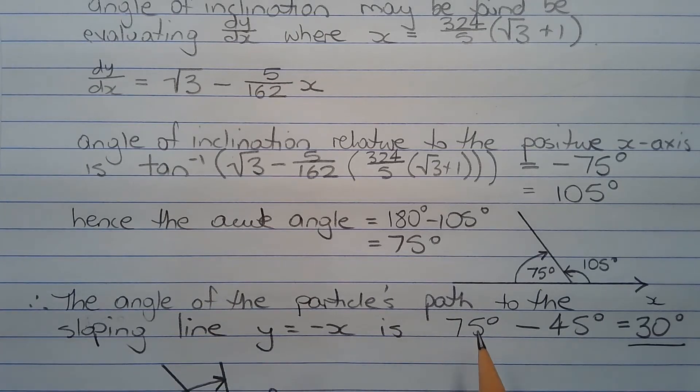Therefore, the angle of the particle's path to the sloping line y equals negative x is 75 degrees minus 45 degrees, which equals 30 degrees.